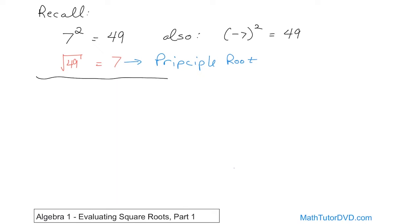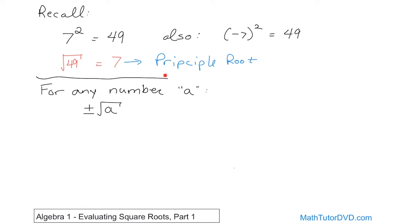So along those lines, I want to write down a few definitions. For any number — we're going to call the number A — we have the square root of A. When we take the square root of A, really what we're getting is plus or minus the square root of A. So the answer can be the positive or the negative value. Those are the two answers you can possibly get. The positive answer is what we call the principal root, and the negative answer is just another answer — sometimes you use it and sometimes you don't.